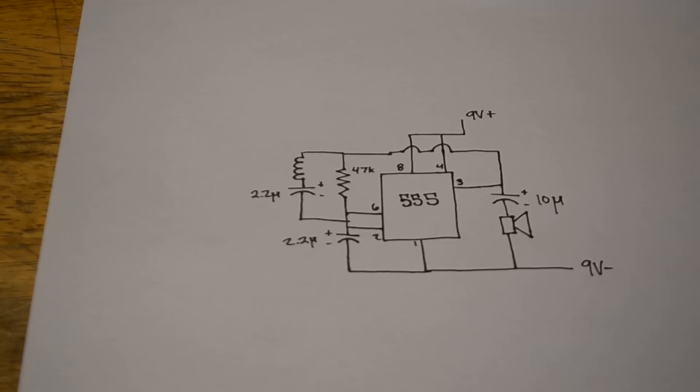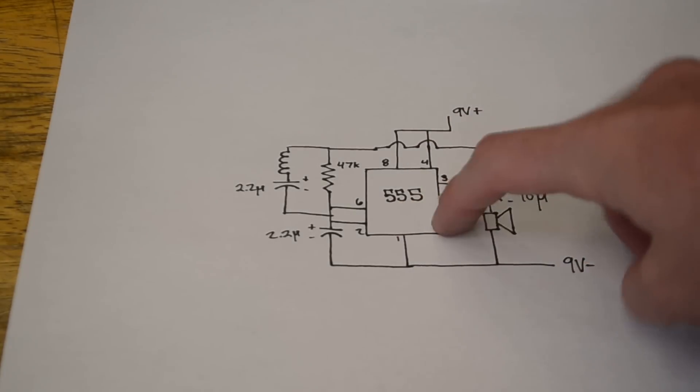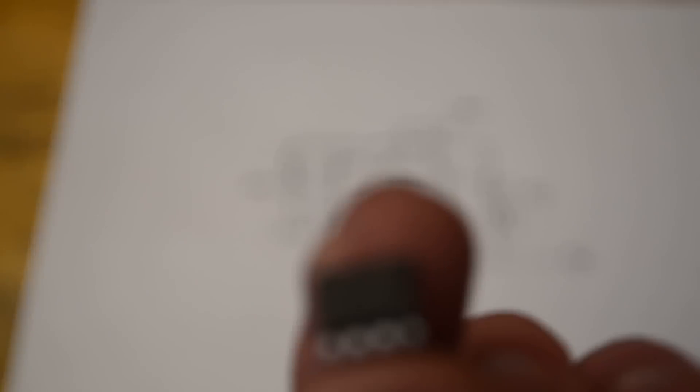And so here's the circuit that we're going to be using. Now the primary component in this, and probably one of my favorite chips, is the 555 timer. It should look relatively like this. Now as you can see, the chip itself has 8 pins.